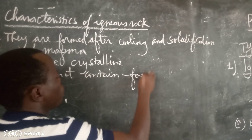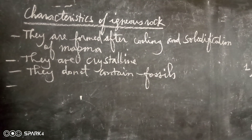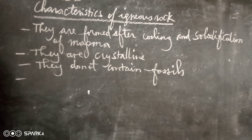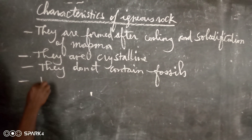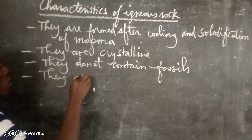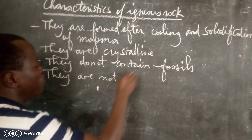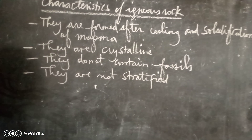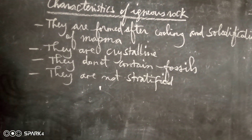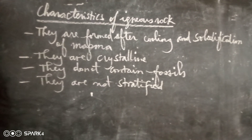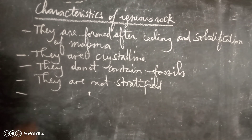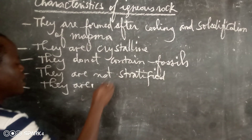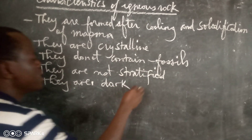They do not contain fossils. They are not stratified, meaning that igneous rocks are not made in layers. They are not stratified. They are dark in color.